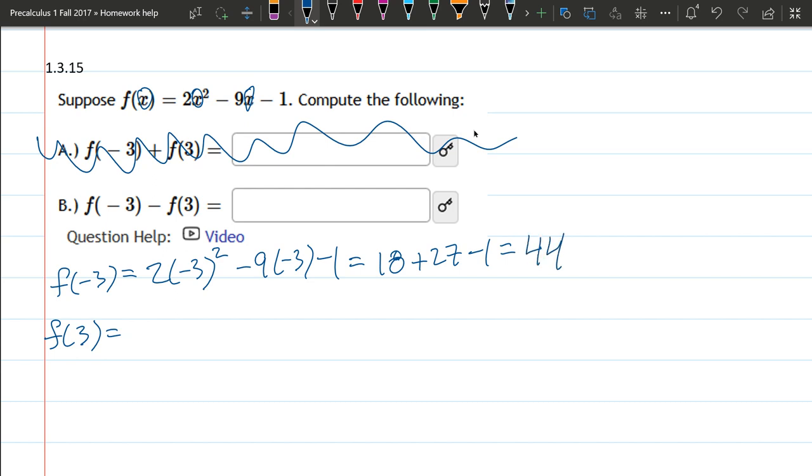F of positive 3, so this is going to be really similar. I'm just putting positive 3 in for the x's. So we've got the same 18 here. Negative times positive is negative. So it's 18 minus 27, minus 1. Let's see, negative 10.